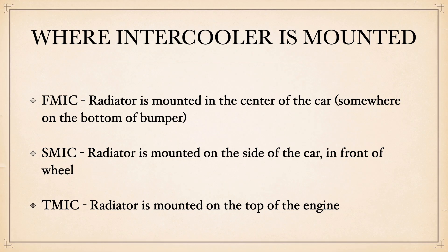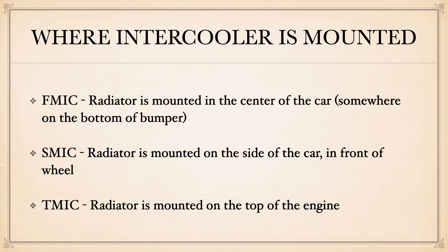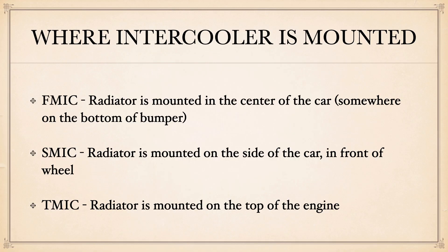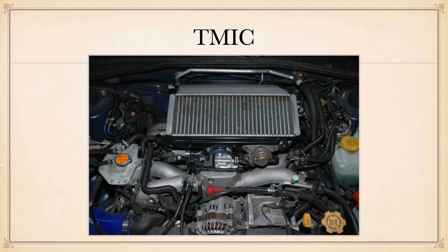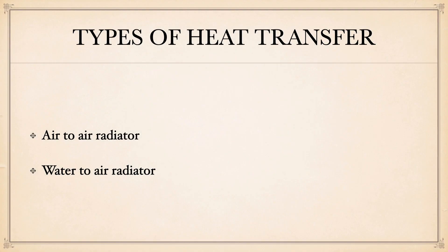Now that we know how and why the intercooler works, we can talk about its placement. There are three basic types: front, side, and top mounted. The front intercooler is placed at the front of the car, often in front of the coolant radiator. The side-mounted intercooler is placed in front of the wheel — as I recall, this is used on the 1.9 TDI VW engines. The top-mounted intercooler is common on Subaru boxer engines, mounted on top of the engine.